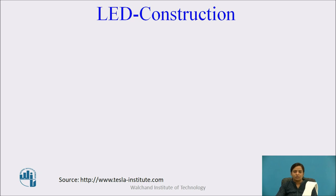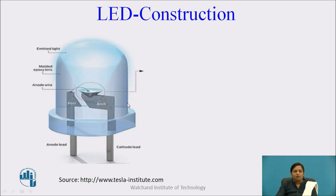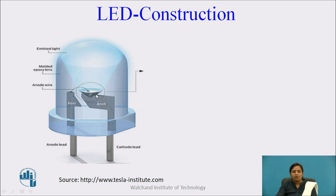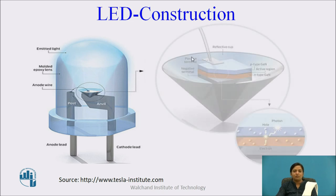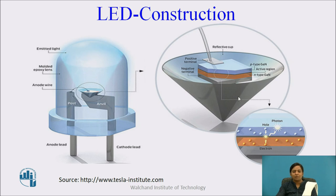Now, LED construction. This is the construction diagram of LED. It is surrounded by transparent hard plastic epoxy resin. Its shape is hemispherical. Due to this shape, the light is emitted uniformly in all directions. There are two metal electrodes, anode and cathode, which are used for an external electric connection. Anode and cathode are connected by a small wire. There is a chip which is placed in a reflective cavity. This chip consists of P-type and N-type semiconductor materials.